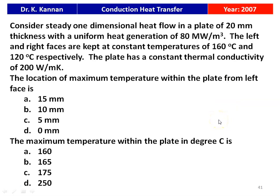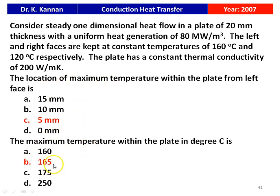The next question is from the 2007 question paper. Consider steady one-dimensional heat flow in a plate of 20 mm thickness with uniform heat generation of 80 MW/m³. The left and right faces are kept at 160°C and 120°C respectively, with thermal conductivity 200 W/mK. The location of maximum temperature within the plate from the left face — options: 15 mm, 10 mm, 5 mm, 0 mm. The answer is 5 mm. The maximum temperature is 165°C. We will see how in the next slide.